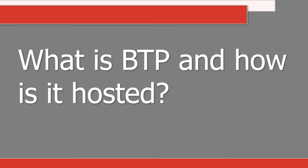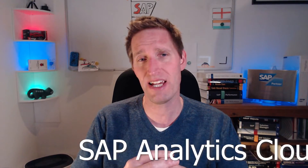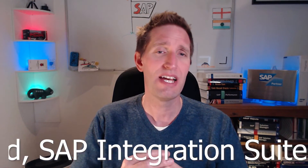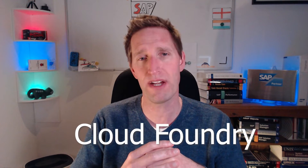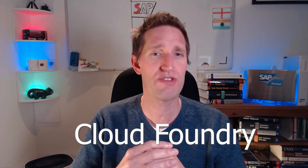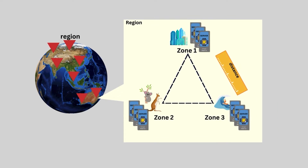What is BTP and how is it hosted? SAP Business Technology Platform is SAP's latest PaaS solution for a lot of the latest SaaS-based products, some examples being SAP Analytics Cloud, SAP Integration Suite, SAP HANA Cloud, and many others. The BTP platform itself is deployed on Cloud Foundry in a resilient pattern across three availability zones, with your selected applications and services deployed in the same manner in the region of your choosing.